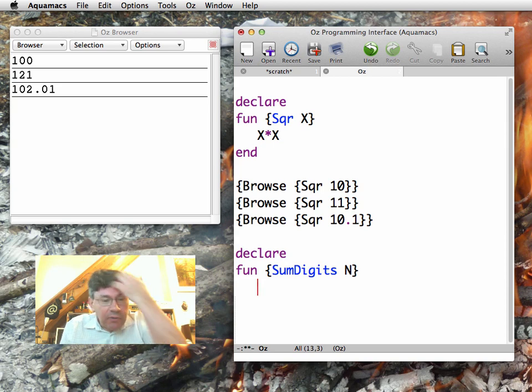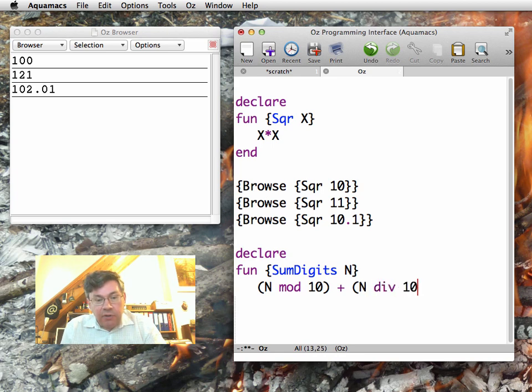For example, this is done using the functions div and mod - division and modulo, which work for integers. I can do n mod 10 for the lower digit, and then I can do n div 10. This divides the number by 10, and if I do mod 10, this will give me the second digit.